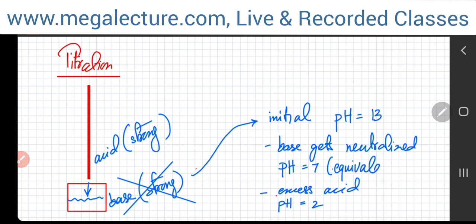The point where the base gets neutralized is known as the equivalence point — in simple terms, the neutralization point. For example, if there were 10 moles of base, they need 10 moles of acid to be completely neutralized. When you've added exactly that amount, the base is completely reacted. That's the equivalence point.